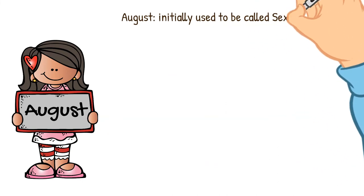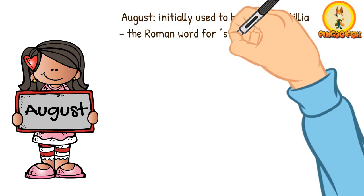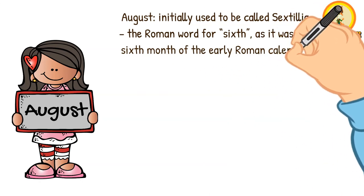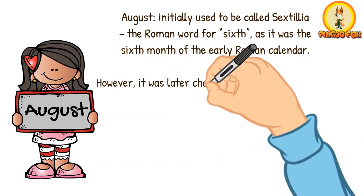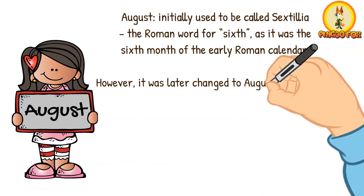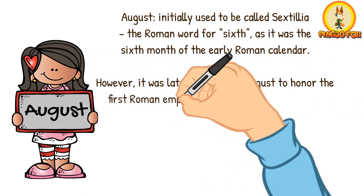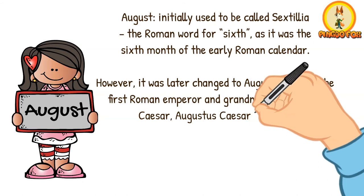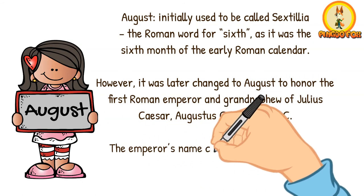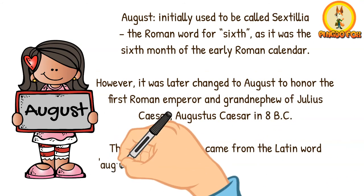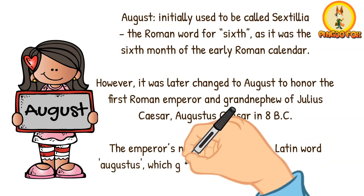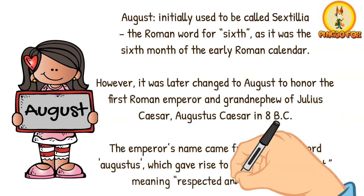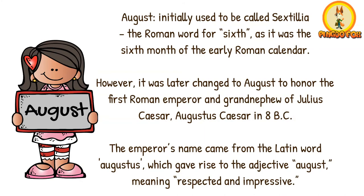August initially used to be called Sextilis, the Roman word for sixth, as it was the sixth month of the early Roman calendar. However, it was later changed to August to honor the first Roman emperor and grand-nephew of Julius Caesar, Augustus Caesar, in 8 BC. The emperor's name came from the Latin word "augustus," which gave rise to the adjective "august," meaning respected and impressive.